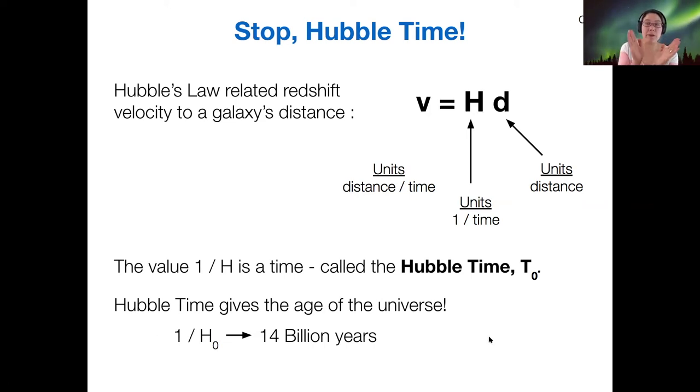But it gives us essentially the age of the universe. So that's just saying that if everything is expanding at a given rate, and we assume that it has always been expanding at that rate, then if we just follow things all the way back in time, then 14 billion years ago is when things had to start expanding in order to have their current distances at the expansion rate we see. So H naught is the Hubble constant right now. And T naught is the age of the universe using that particular constant.